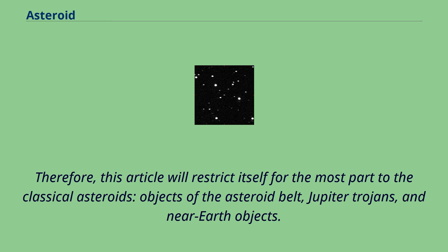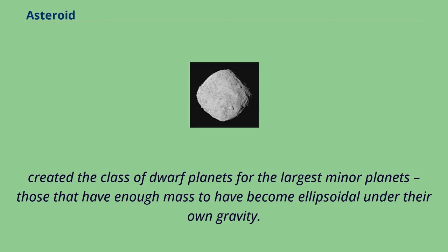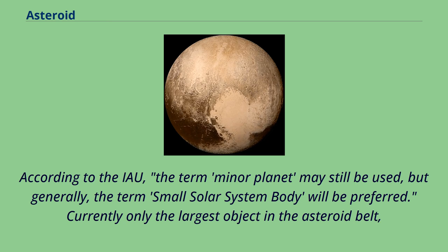This article will restrict itself for the most part to the classical asteroids: objects of the asteroid belt, Jupiter Trojans, and near-Earth objects. When the IAU introduced the class 'small solar system bodies' in 2006 to include most objects previously classified as minor planets and comets, they created the class of dwarf planets for the largest minor planets — those that have enough mass to have become ellipsoidal under their own gravity. According to the IAU, the term minor planet may still be used, but generally the term 'small solar system body' will be preferred.